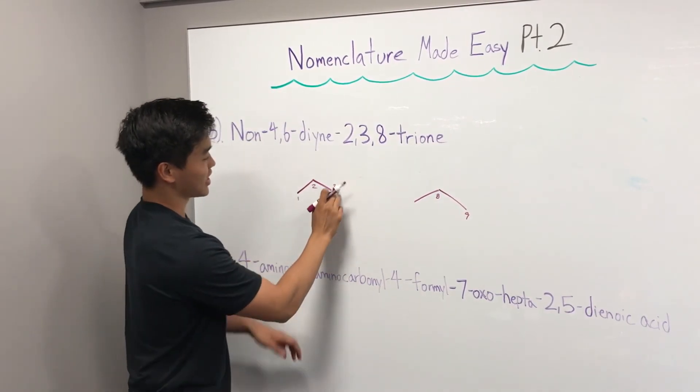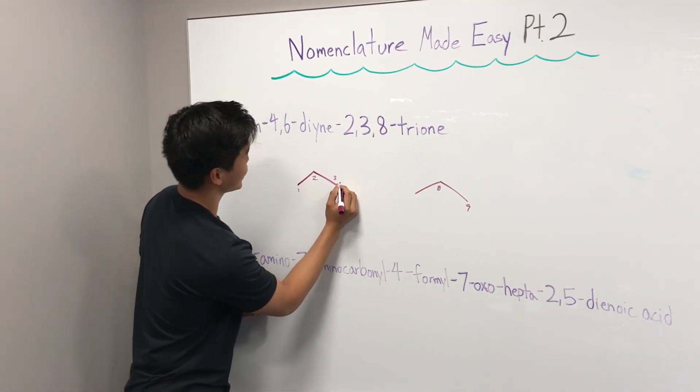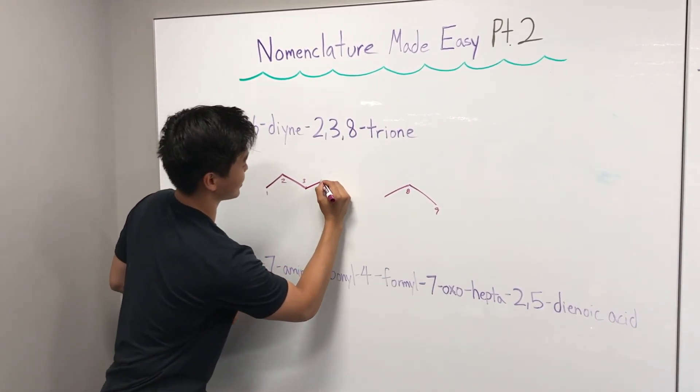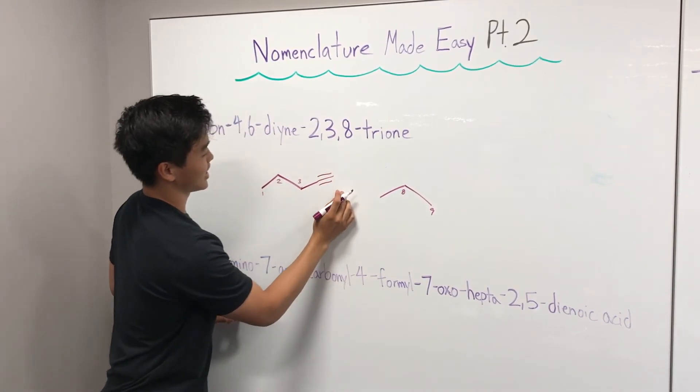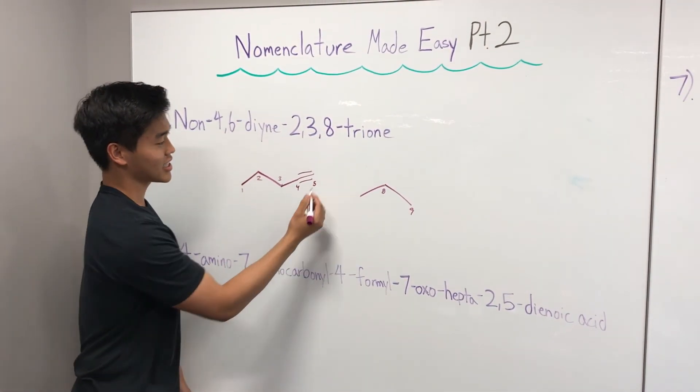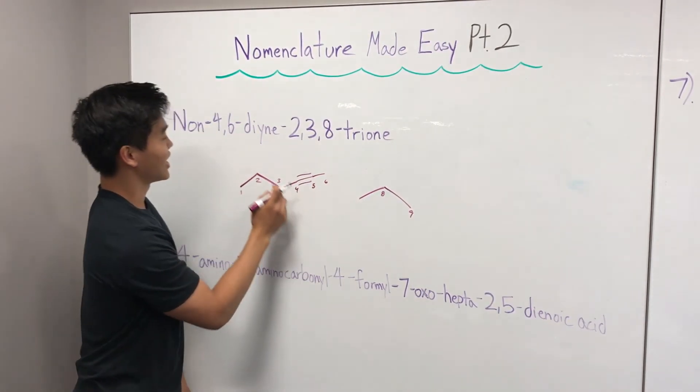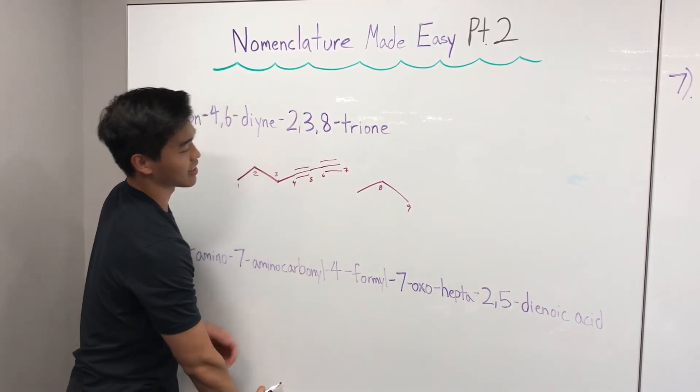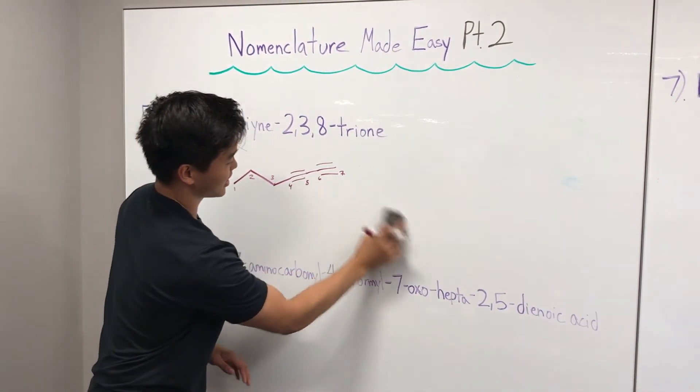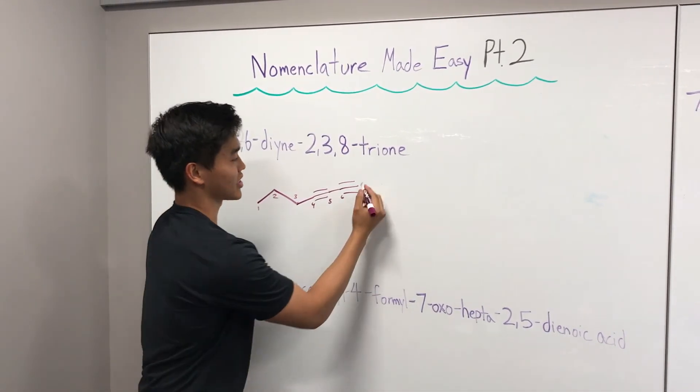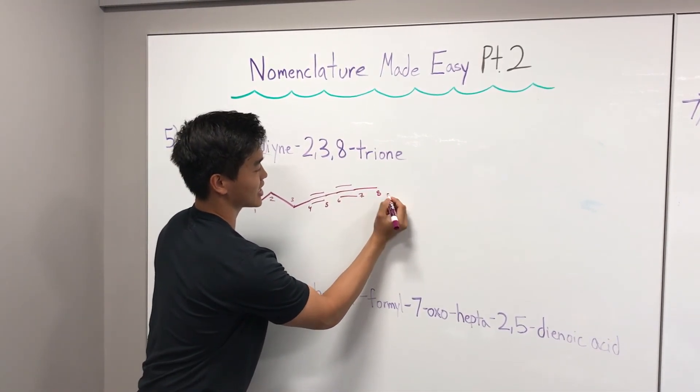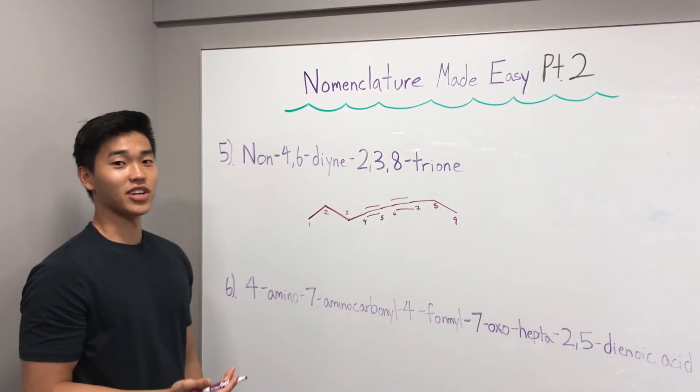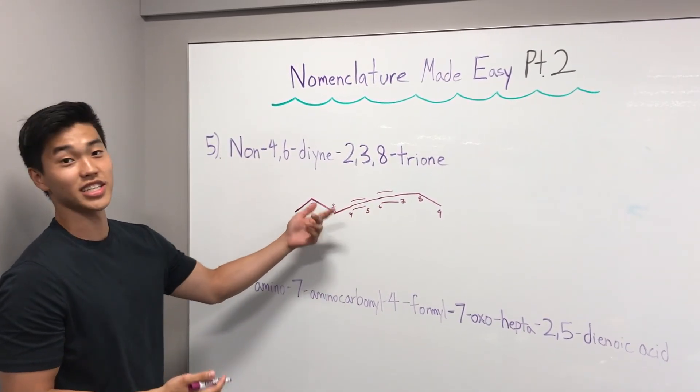We know that triple bonds have to be straight because of the rigid structure and SP hybridization. So I'm actually going to redraw this carefully. Carbon three and carbon eight here. Four to five has to be straight. Five and six also has to be straight. Six to seven also has a triple bond. Seven to eight also has to be straight because of the same hybridization.